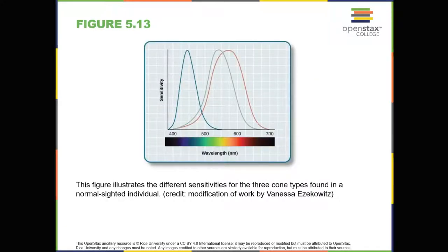Color and depth perception. We don't see the world in black and white. Neither do we see it as two-dimensional or flat. Let's look at how color vision works and how we perceive three dimensions: height, width, and depth. Color vision. Normal sighted individuals have three different types of cones that mediate color vision. Each of these cone types is maximally sensitive to a slightly different wavelength of light.